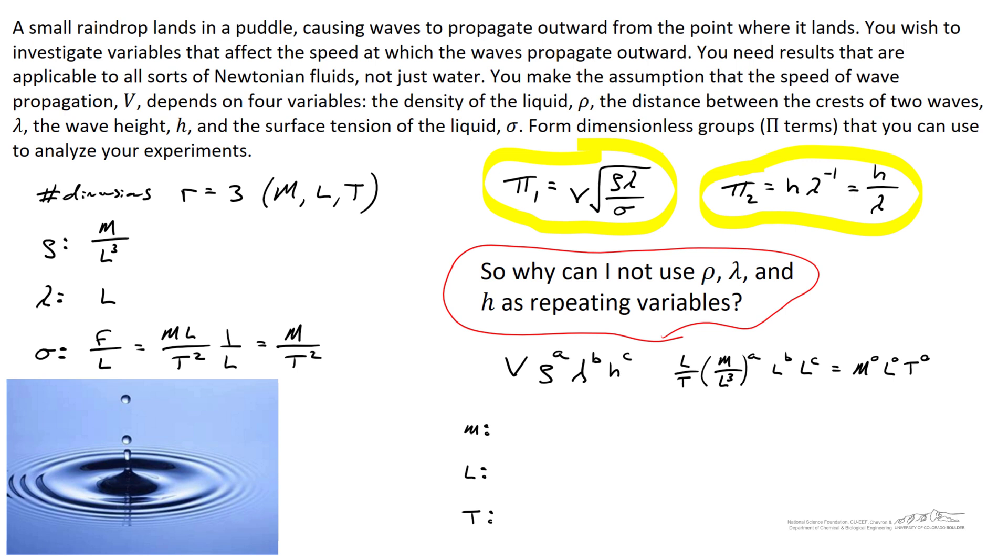For the case of mass, we'll find that the value of a has to be equal to zero. For the equation for length, we've got 1 minus 3a plus b plus c has got to equal zero. And finally for time, we've got negative one is equal to zero. We find that this equation doesn't make any sense, and we can't perform the analysis when we choose these as repeating variables. So be careful when you choose repeating variables that they all have different units.